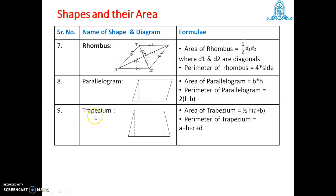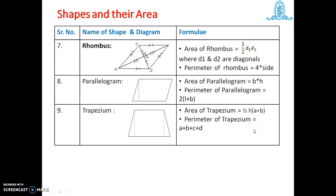Next, trapezium. Area of trapezium is equal to half into h, where h is the height, multiplied by (a plus b), where a and b are the lengths of the parallel sides. The perimeter of trapezium is equal to the addition of all sides: a plus b plus c plus d. This covers all the formulae for these shapes, and using them we can solve any example related to two-dimensional figures. Now we start with some examples.